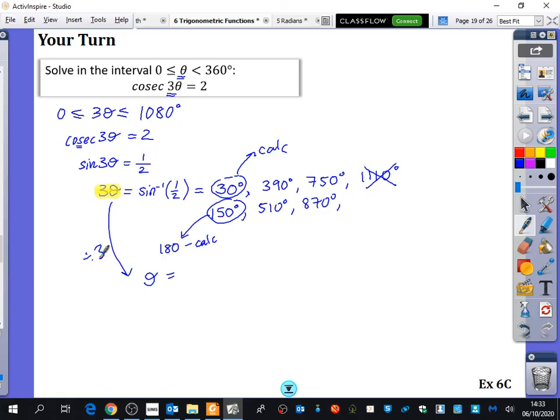And we're going to divide them all by 3. So 30 divided by 3 is 10. 390 divided by 3 is 130. And 750 divided by 3 is 250. 150 divided by 3 is 50. 510 divided by 3 is 170. And 870 divided by 3 is 290. So you've got 1, 2, 3, 4, 5, 6 solutions here.